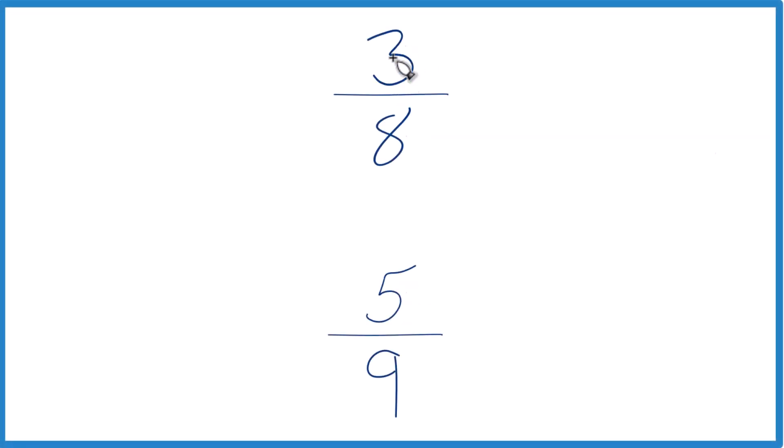So let's take a look and see which one of these two fractions is larger, 3 eighths or 5 ninths. And here's how we could do it.